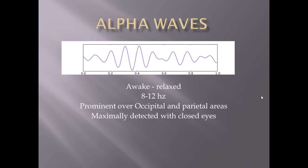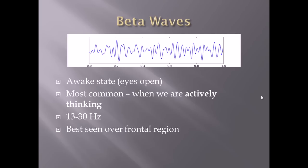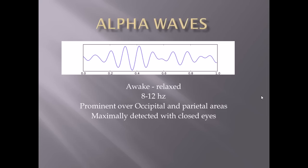Here's an alpha wave. In the little diagram it shows some alpha waves at an 8 to 12 hertz pattern. Alpha waves are spread out a little more than beta waves. You'll see alpha waves when you're awake in a relaxed state — with your eyes closed, just laying there relaxed. With your eyes open and when you're actively thinking, you'll see a different brain wave pattern. Also note that alpha waves are prominent over the occipital and parietal areas of the brain.